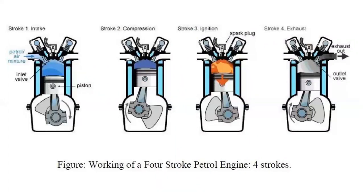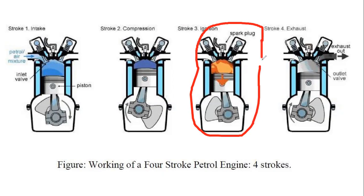The power stroke basically happens after the spark. When the compression stroke happens inside the cylinder, the air and fuel mixture — the air and petrol mixture — is compressed so the pressure is very, very high.